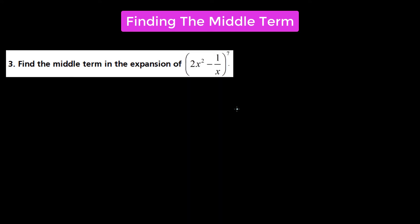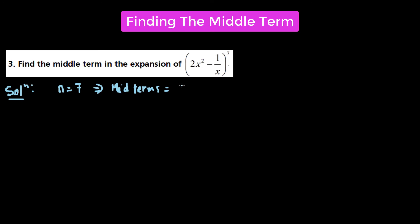Let's go to the next one. Here we are given the binomial expression (2x² − 1/x) raised to the power of 7, and we have to find out the middle terms. We have n = 7, which is odd. That implies the middle terms will be at positions (7+1)/2 = 4 and 5. So the 4th term and the 5th term.